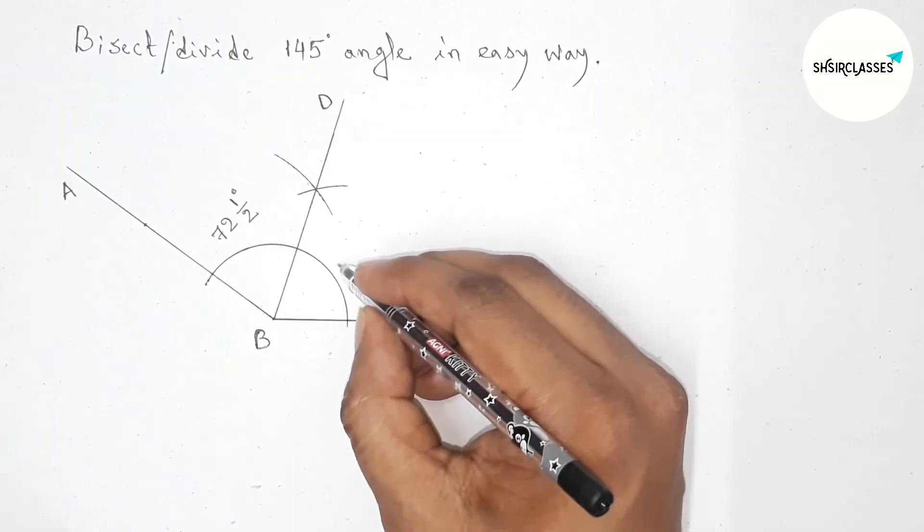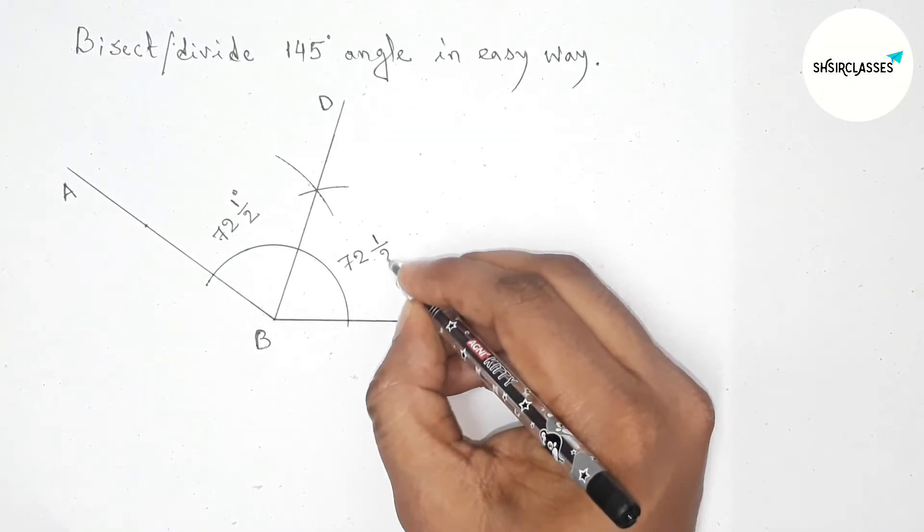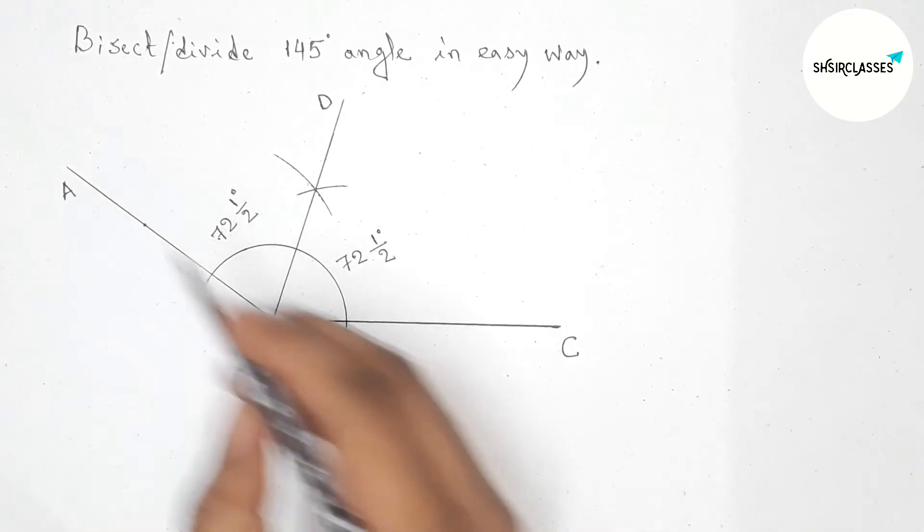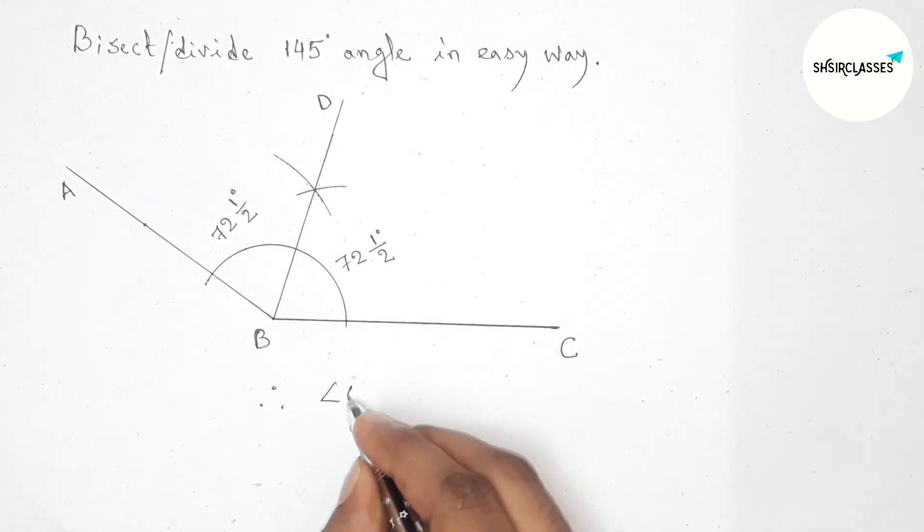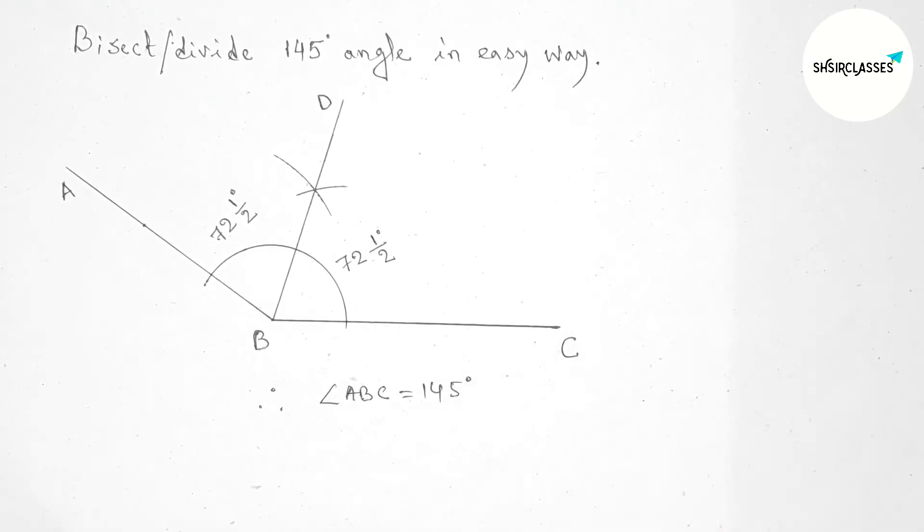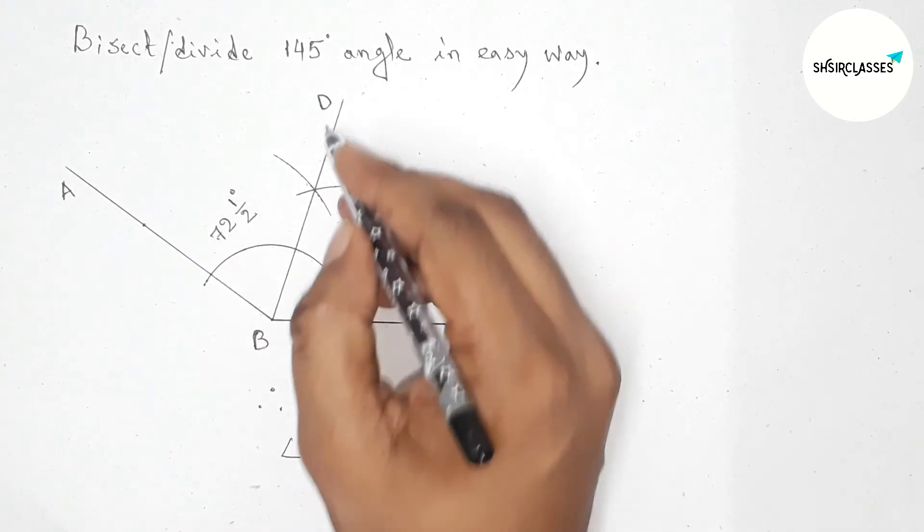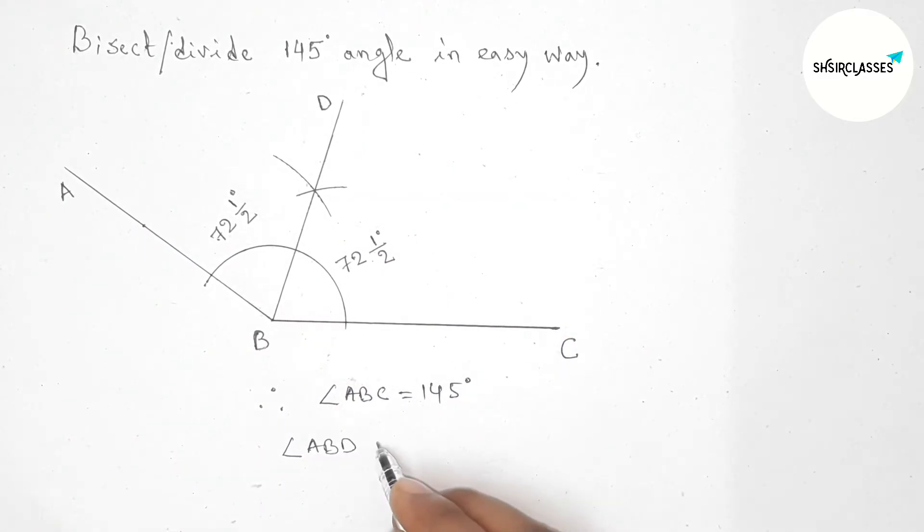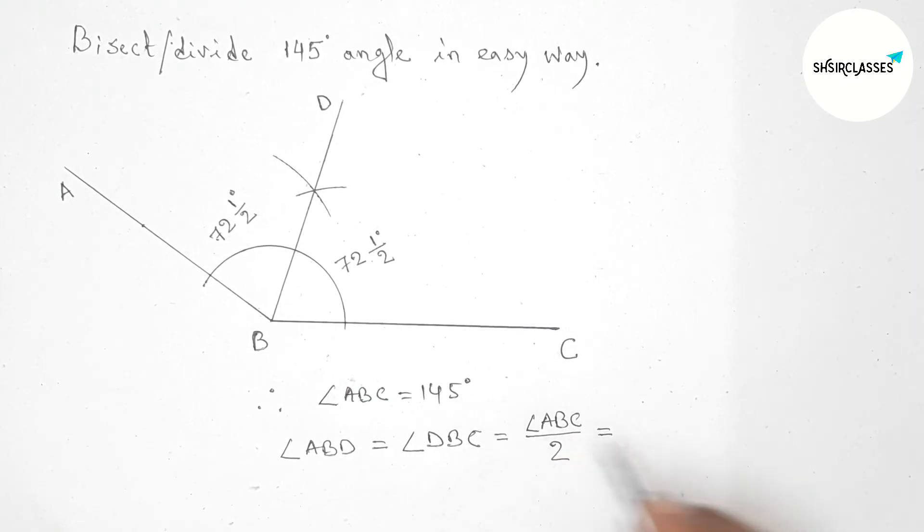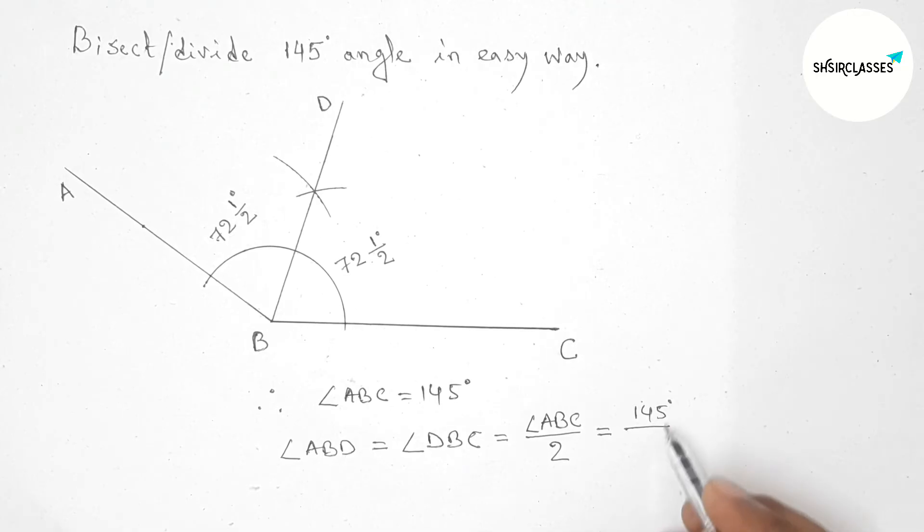And this is 72 and a half degrees. So therefore angle ABC is 145 degrees, and angle ABD is equal with angle DBC. So angle ABD is 145 by 2, that is 145 divided by 2, equals 72 and a half degrees.